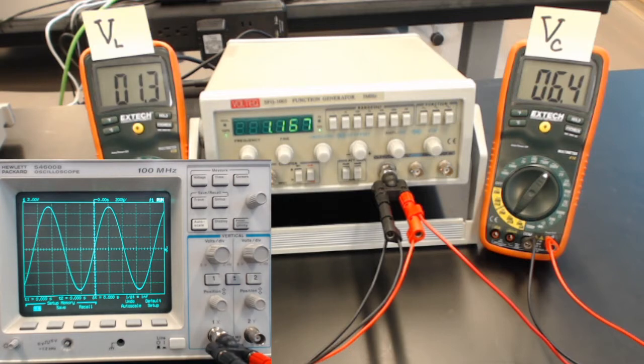But the second method is to look at the amplitude of the signal from the source, Vs, on the oscilloscope.